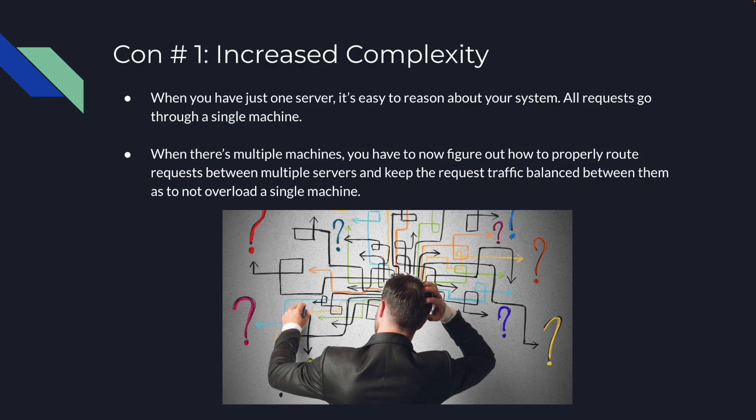Like I said, there's no free lunch in system design. One of the first prices you pay with horizontal scaling is increased complexity. When you have just one server it's easy to reason about your system, but with multiple machines you now have to figure out how to properly route requests between multiple servers and keep the request traffic balanced between them so as not to overload a single machine.